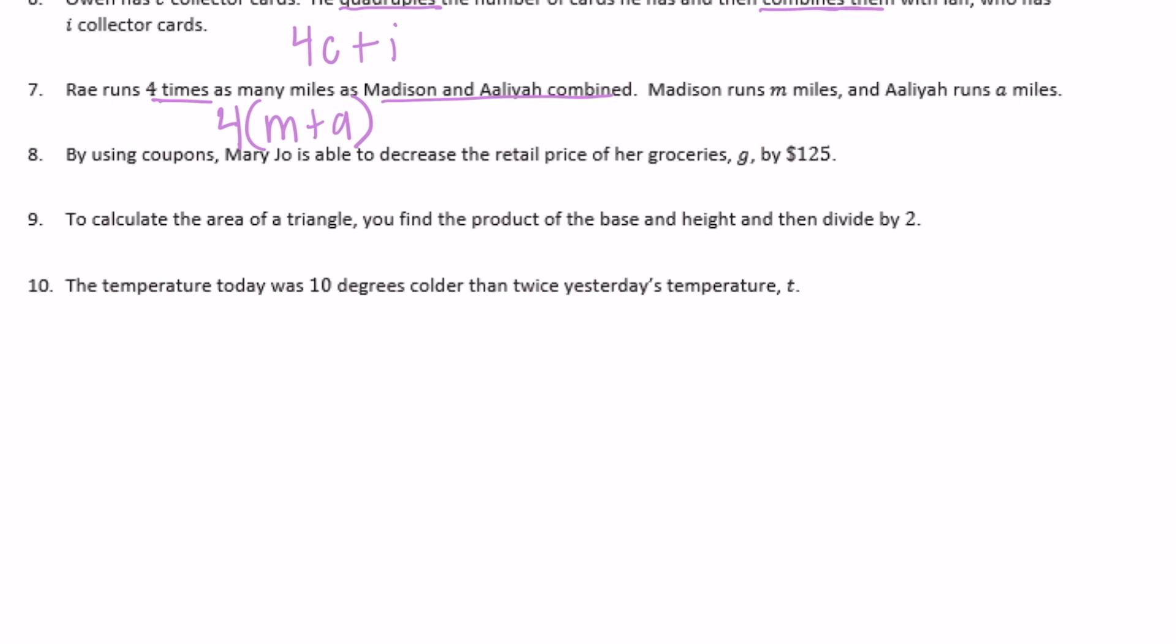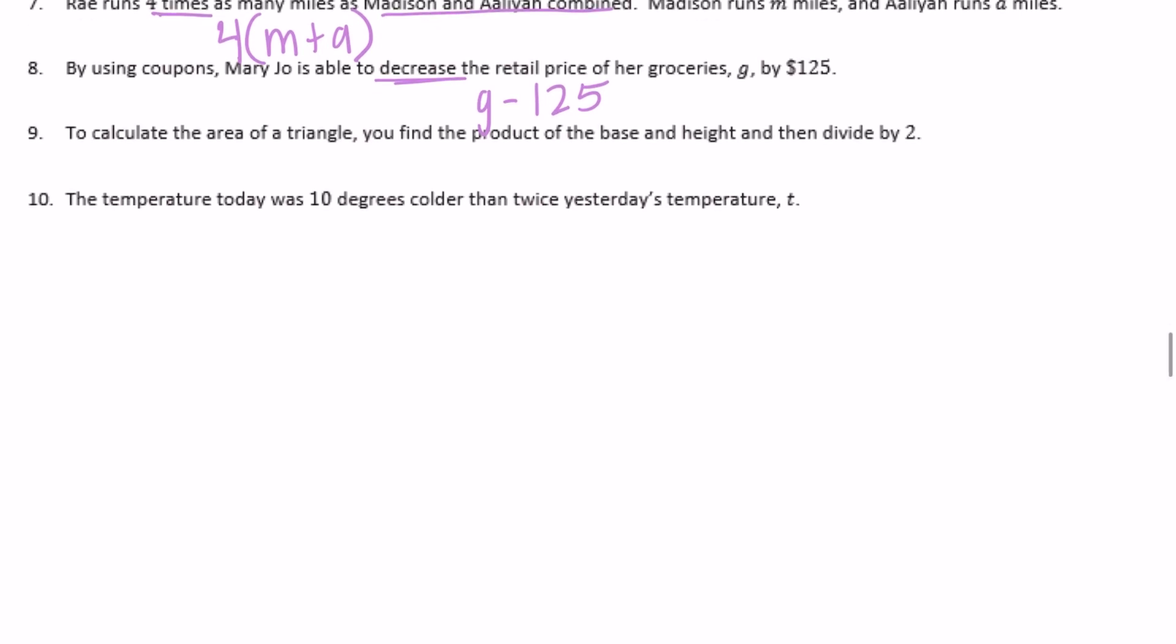Number eight: By using coupons, Mary Jo is able to decrease the retail price of her groceries, G, by $125. She decreases them, so we subtract $125: G - 125.